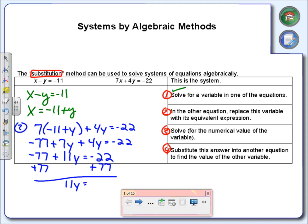So I've got negative 77 plus 11y equals negative 22. I'm still solving for y, so I'm going to add 77 over here. Negative 22 plus 77 is 55. The last thing I'm going to do is divide by 11. So 55 divided by 11 is 5, so the y value is 5.